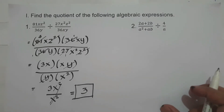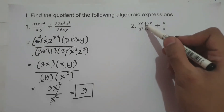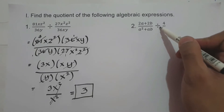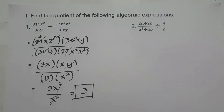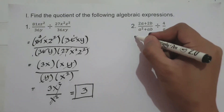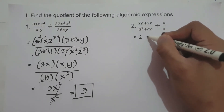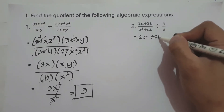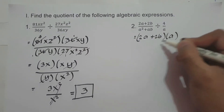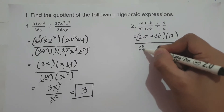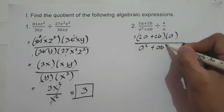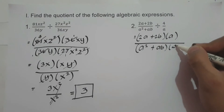What about number 2? We have 2a plus 2b over a² plus ab, divided by 4 over a. So let's set up 2a plus 2b times a over a² plus ab times 4.